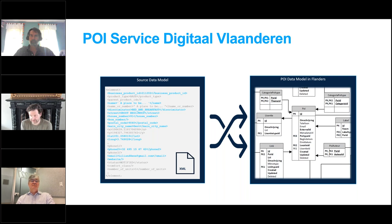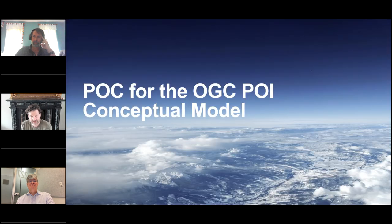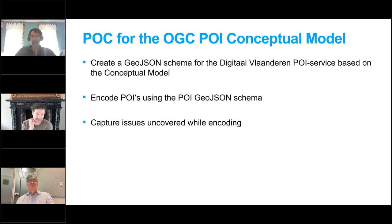As a publisher, there are two interests in the POI standard. One is it would be highly beneficial to receive data sent to us in a standard way. The other is, obviously, we'd like to publish it in a standardized way. Our interest in this is both ways. With this in mind, we performed a proof of concept for which we first created a JSON schema based on our POI service and the conceptual model.